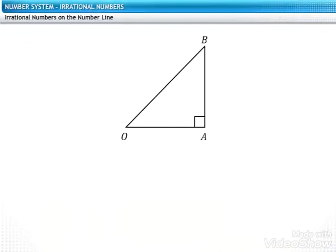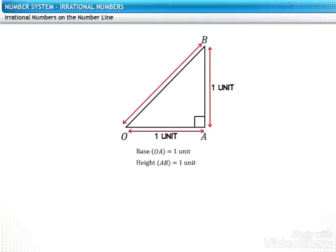Consider a right-angled triangle OAB. Its base OA and height AB is one unit each. Here we need to find the hypotenuse OB.